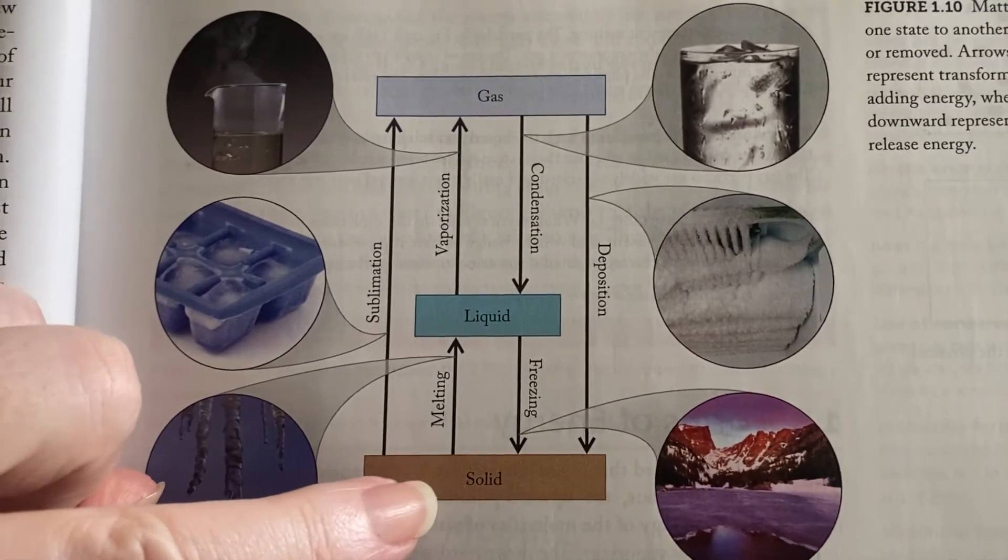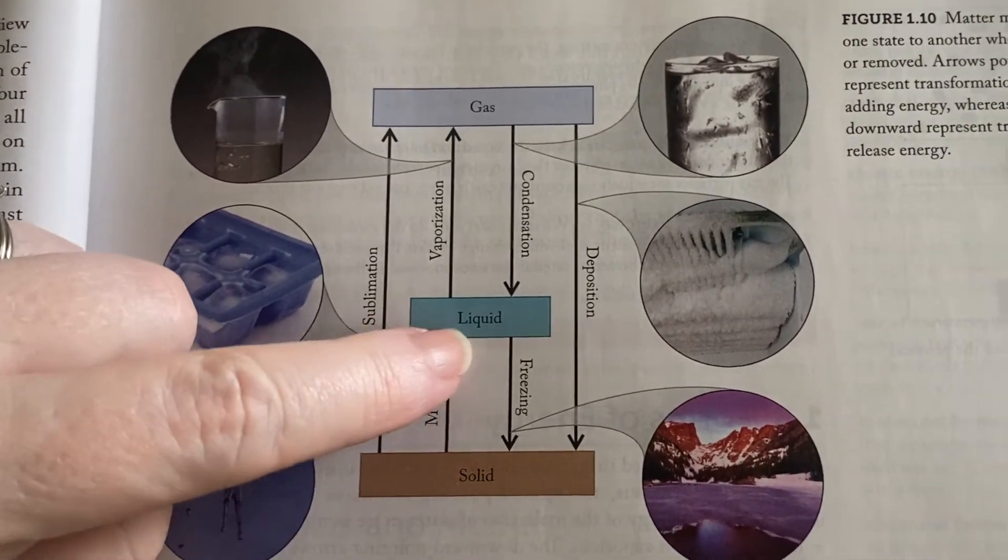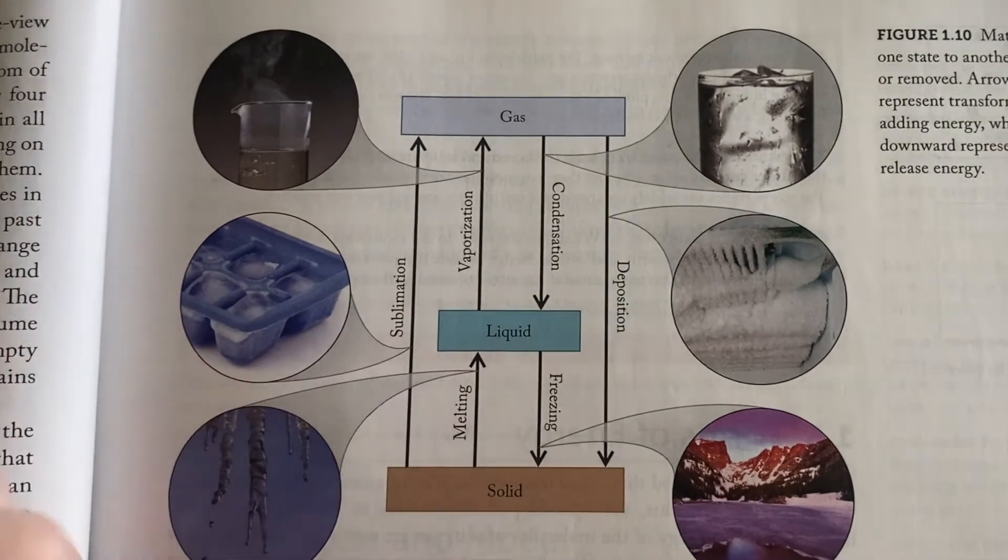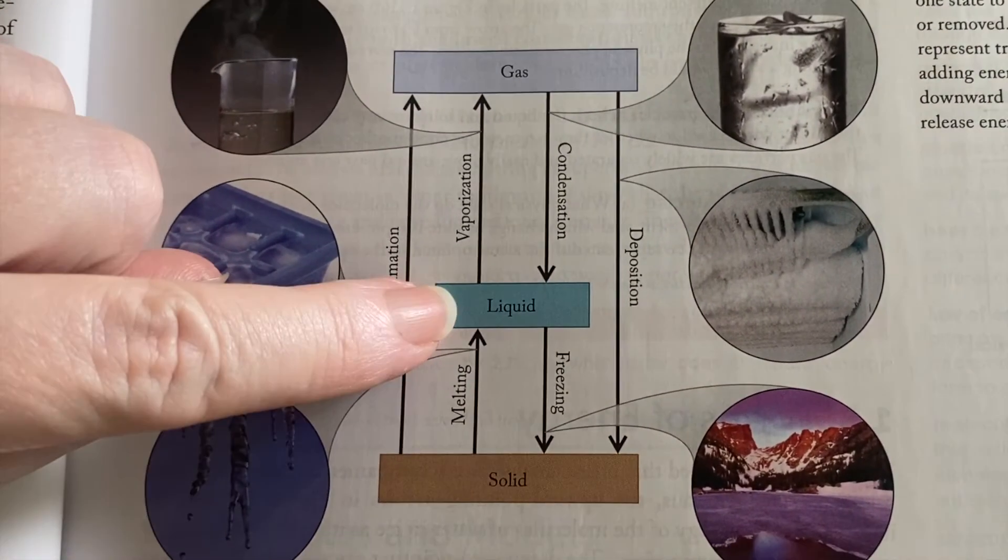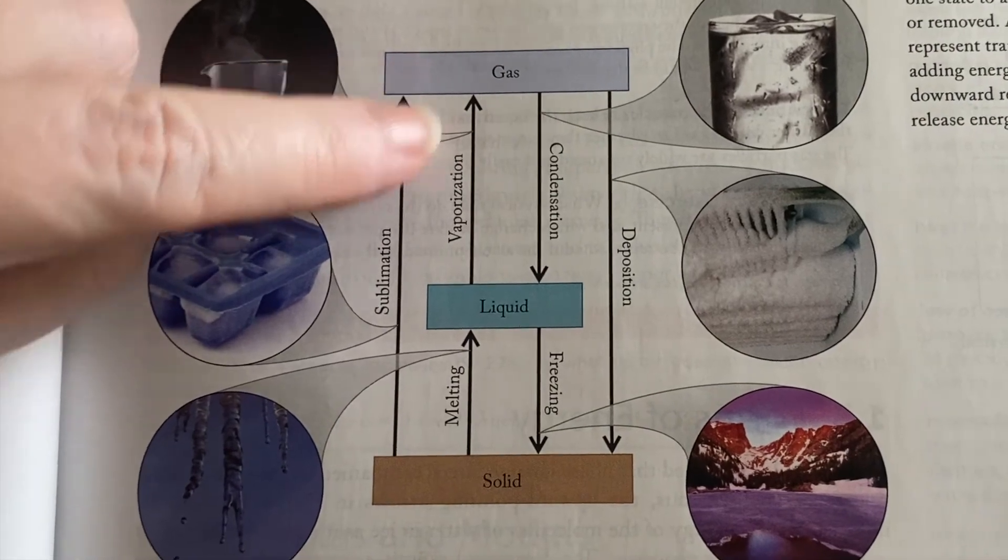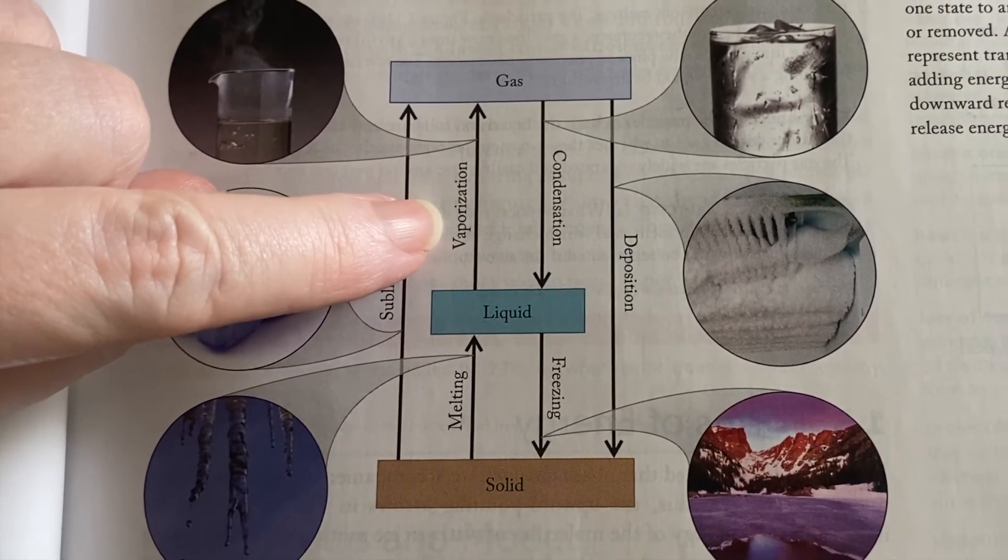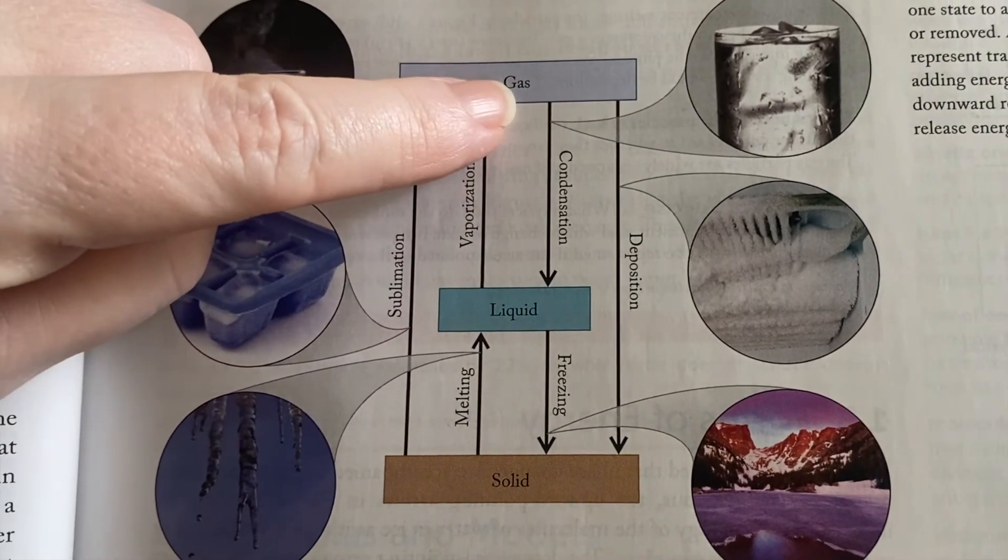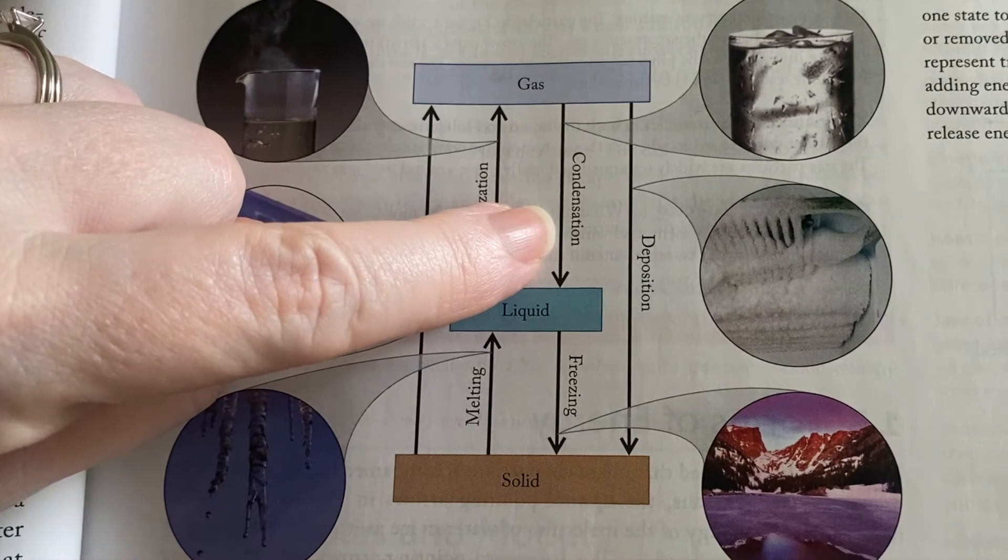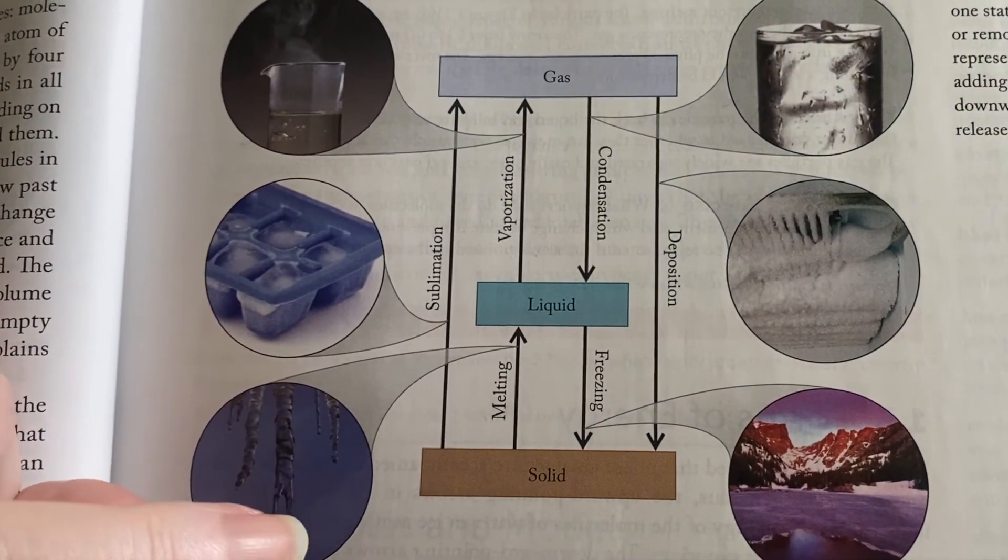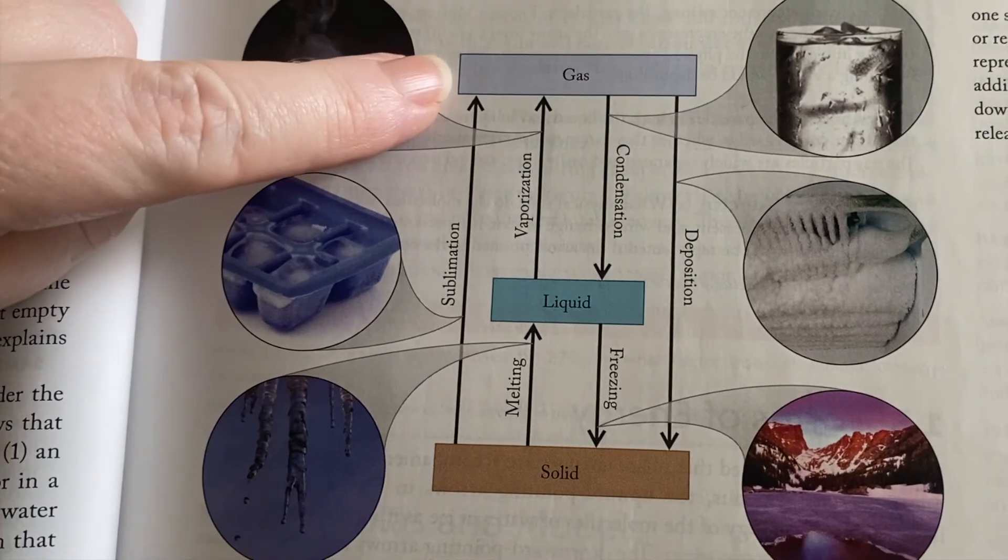Some of these you're quite familiar with. If a solid turns into a liquid it's melting. If a liquid turns into a solid it's freezing. You're very familiar with those particular words. If a liquid becomes a gas it's vaporization—sometimes we call it evaporation, but vaporization. If a gas goes back to being a liquid that's condensation.